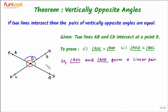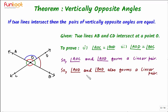Can we identify one more linear pair here which has one of these angles? Of course we can. Here, angle AOD forms a linear pair with angle DOB, the one shown in brown here. So angle AOD and angle DOB also form a linear pair.